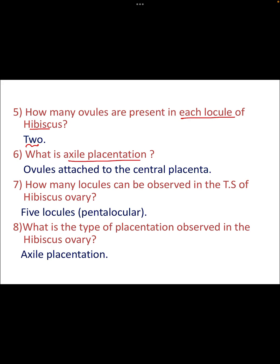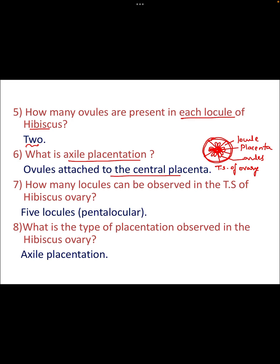What is axial placentation? Ovules are attached to the central placenta. If you see the TSO of ovary of a hibiscus, you can see locule one, two, three, four, and five. Here the ovules are attached to the central placenta — the placenta is at the center. You can see the ovules within each locule in this TSO of ovary.